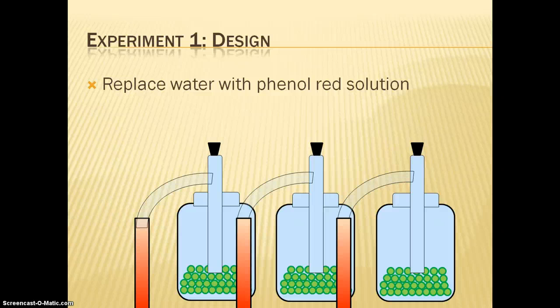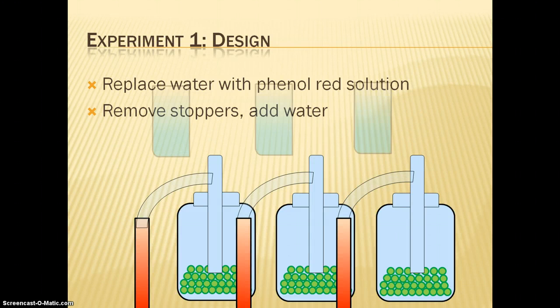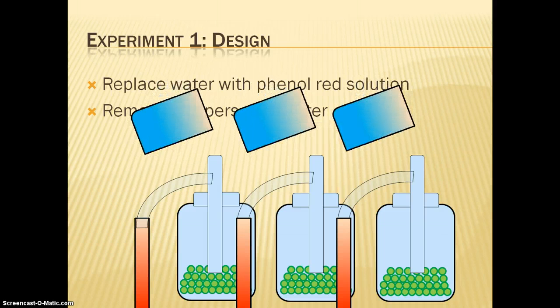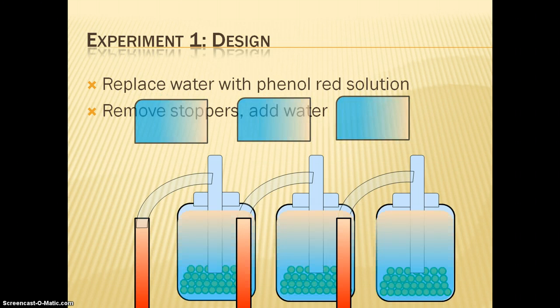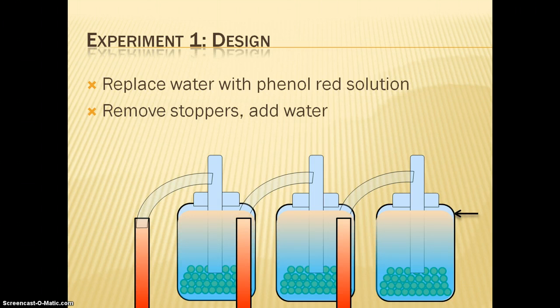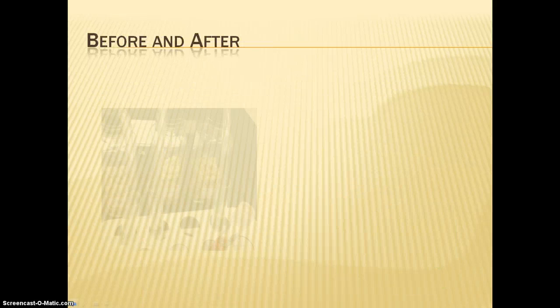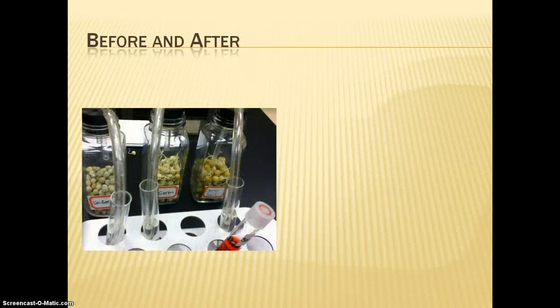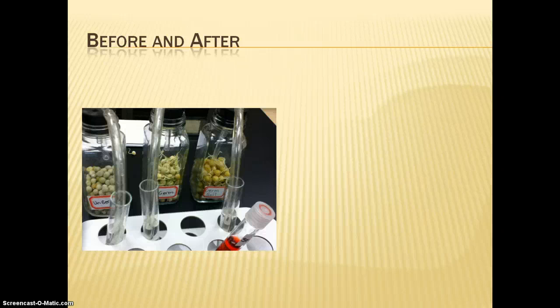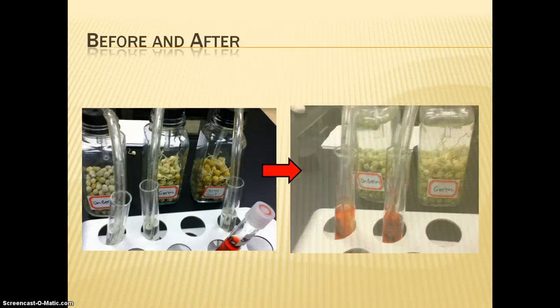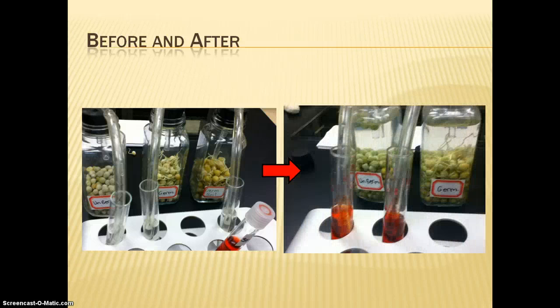Removing the rubber stoppers, water should be added slowly up to the corners. Here we have the beakers, and they're filling up the water right up to where this arrow shows you at the rightmost beaker. This first picture shows you the experiment prior to exchanging the water in the test tubes with the phenol red. The second picture shows the experiment after we added the water to the respiration containers.